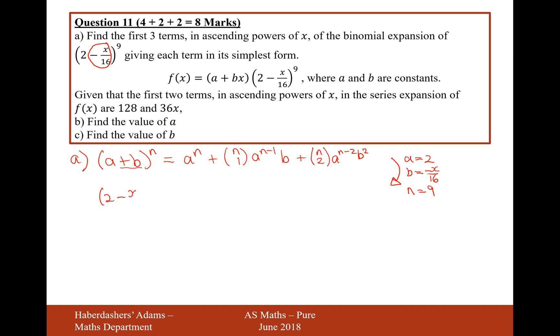So, therefore, 2 minus x over 16 to the power of 9 is going to be equal to 2 to the power of 9 plus 9 choose 1, 2 to the power of 8, and then minus x over 16 as the value for b. Then it's going to be 9 choose 2, 2 to the power of 7, and then it's going to be minus x over 16 to the power of 2.